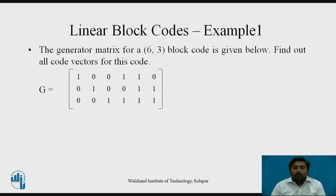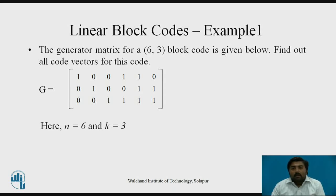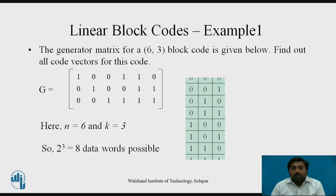Now let us see the actual example. The generator matrix for a (6, 3) block code is given, having 3 rows and 6 columns. We need to find all code words for this code. Since n equals 6 and k equals 3, the number of possible data words is 2 raised to k, which is 2 raised to 3 equals 8. So there are 8 data words, ranging from 0,0,0 to 1,1,1.